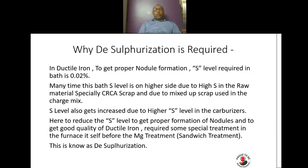To get good quality ductile iron and proper nodule formation, some special treatment is required in the furnace itself before magnesium treatment. This is called desulphurization — a process performed in the furnace to reduce the higher sulfur level in the bath.